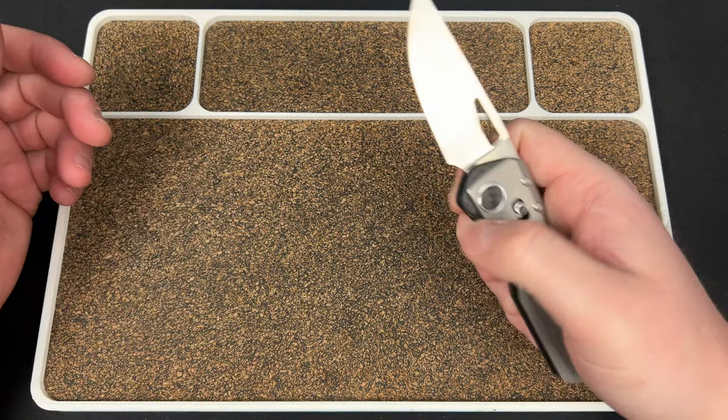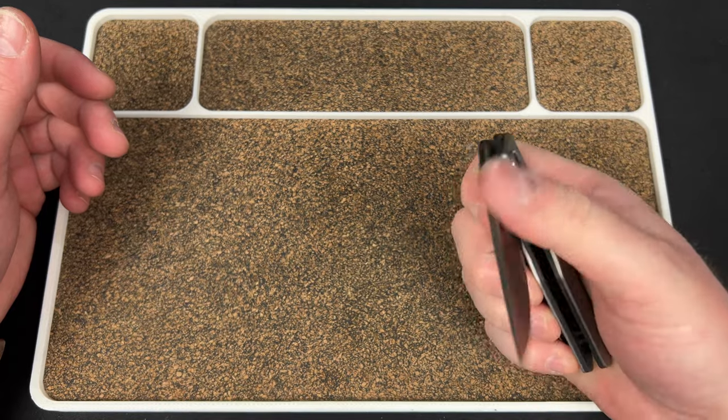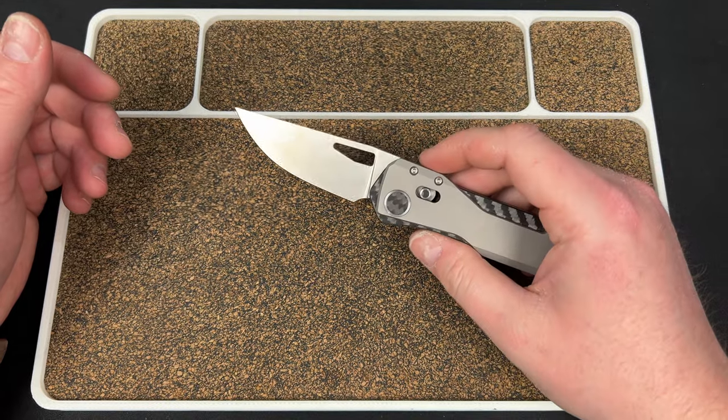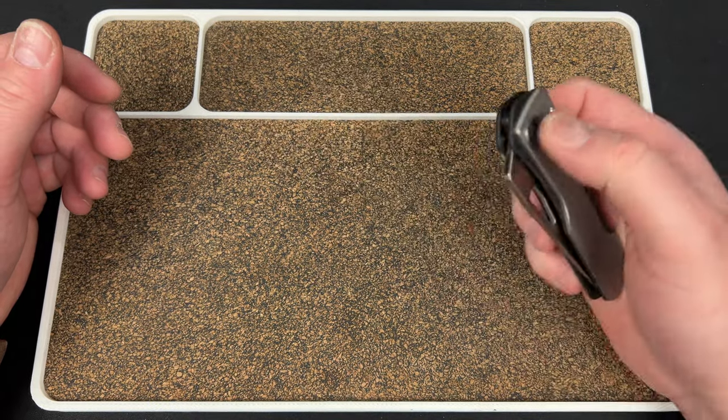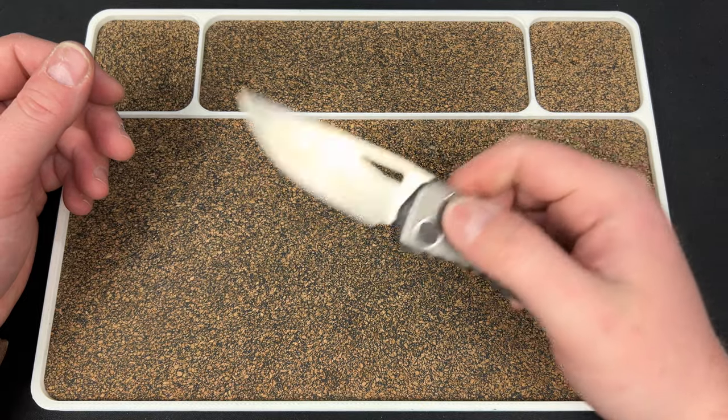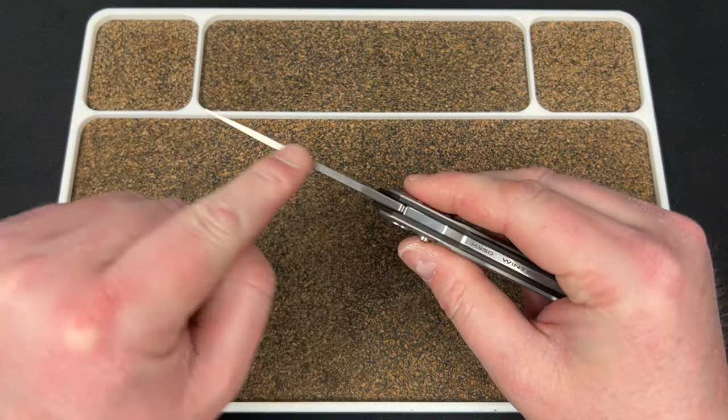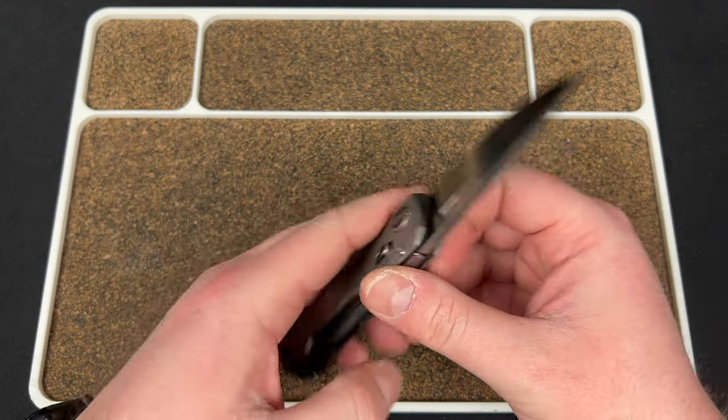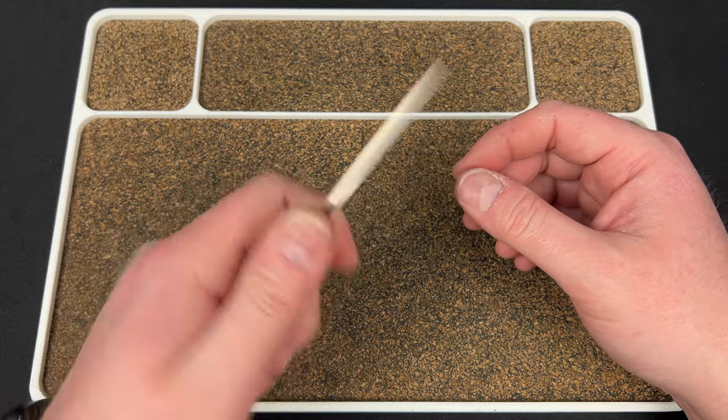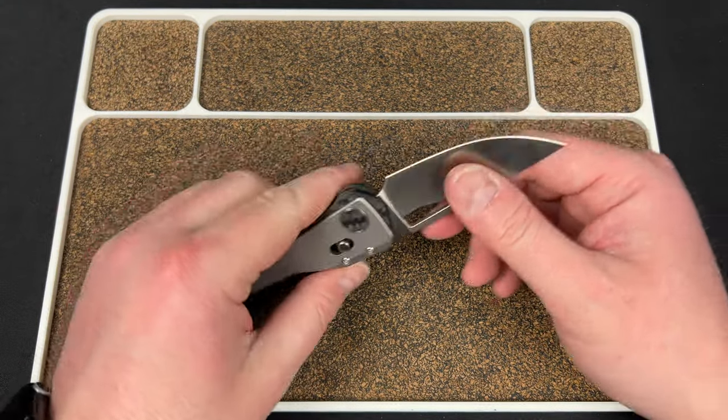But, I did use it a little bit. I cut some laundry detergent sheets. I opened a couple packages. And, I think I cut, like, a piece of cardboard or something. And, it's fine. You know, it does what you want it to do. Relatively thin stock. Full flat grind. I mean, it's going to cut. It's going to do a good job. Best tech. M390. All of that works, right?